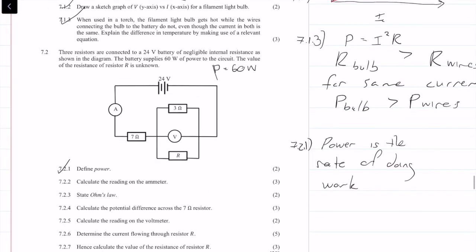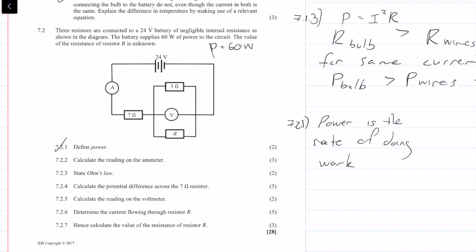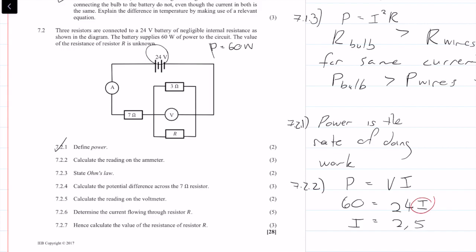Question 7.2.2 asks us to calculate the reading of the ammeter. Using the equation P equals V times I, we know the power is 60 watts and the voltage is 24 volts. Solving for I, we get I equals 2.5 amps, and we get three marks.